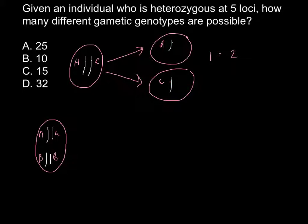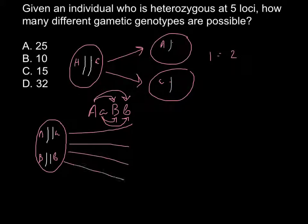How many different combinations may we get here? We may get capital A, small a, capital B, and small b. So we may have a situation when this cell would produce four types of gametes. Let me draw it here - four different variants.